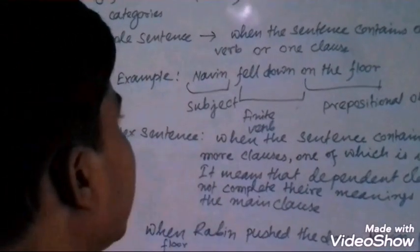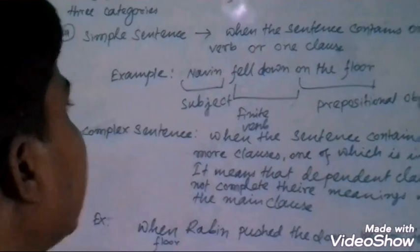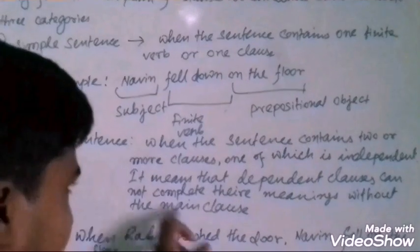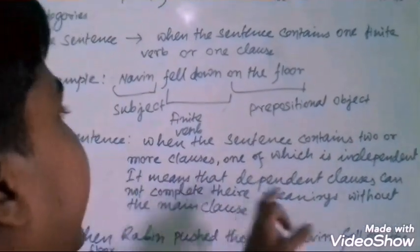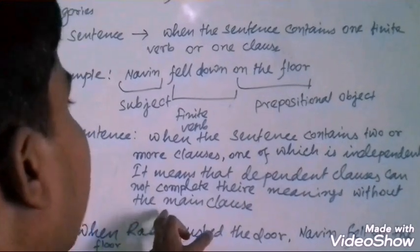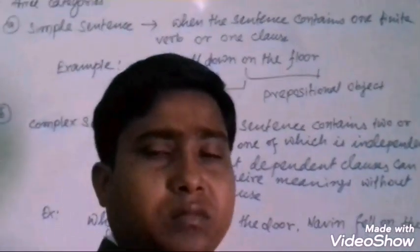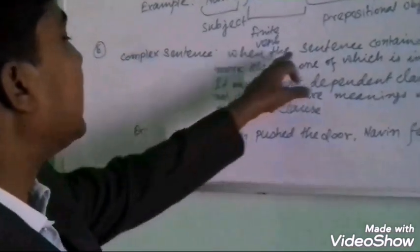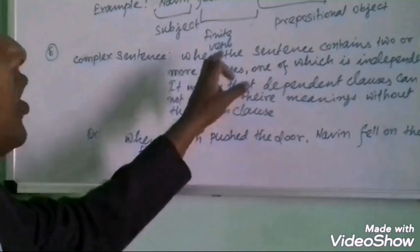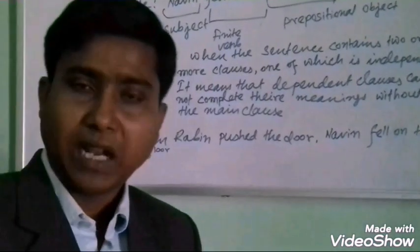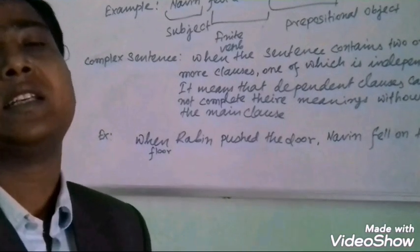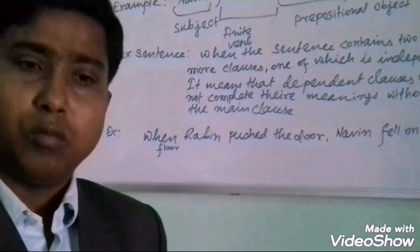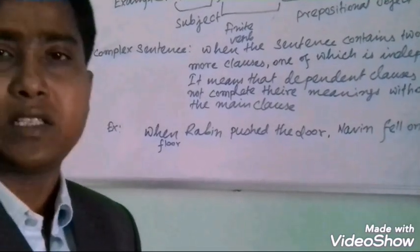What is a Complex Sentence? When the sentence contains two or more clauses, one of which is independent — it means that the dependent clauses cannot complete their meanings without the main clause. So what is a Complex Sentence? When the sentence contains two or more clauses, in a Complex Sentence there may be one principal clause and more than two subordinate clauses depending on it.